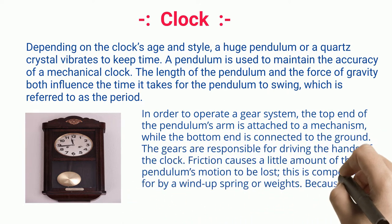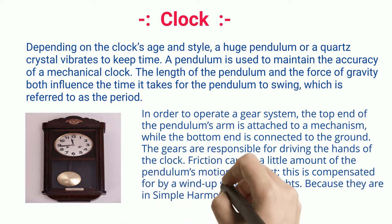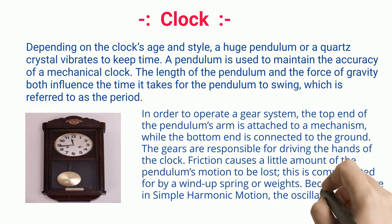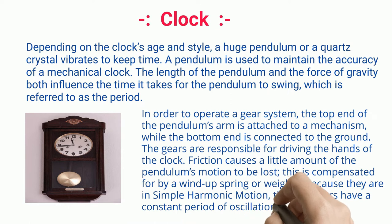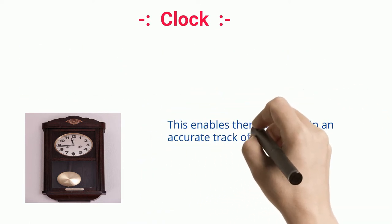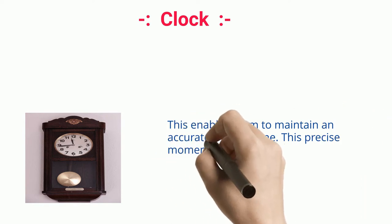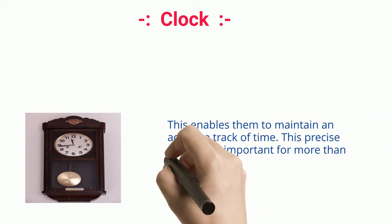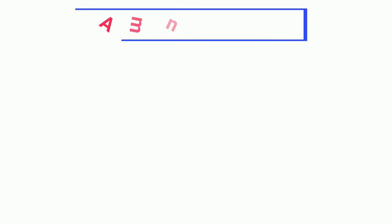Because they are in simple harmonic motion, the oscillators have a constant period of oscillation. This enables them to maintain an accurate track of time. This precise moment is important for more than simply convenience.